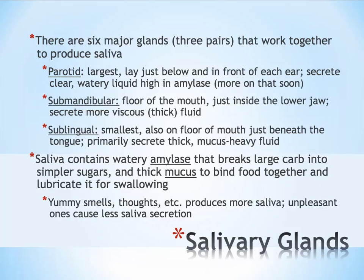The next largest glands are called the submandibular. Sub means below and mandibular means mandible, or the lower jaw. So the submandibular glands are found at the very floor of the mouth, just inside the lower jawbone, and they secrete a much thicker fluid than the parotid glands.